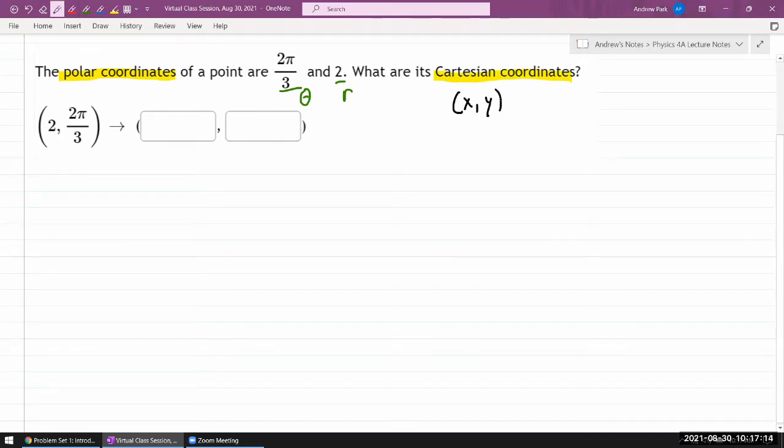And polar coordinates would be, the way it's written here, it would be r and θ. So let me draw a representation of this point.